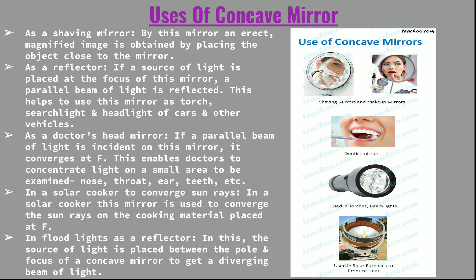As a reflector, if a source of light is placed at the focus of a concave mirror, a parallel beam of light is reflected. This helps use this mirror as a torch, searchlight, or headlight for cars and other vehicles. As a doctor's head mirror, a parallel beam of light incident on the mirror converges at the focus. This rule — that light from the focus reflects as a parallel beam, and parallel rays converge at F — enables doctors to concentrate light on a small area to examine the nose, throat, ear, and teeth.